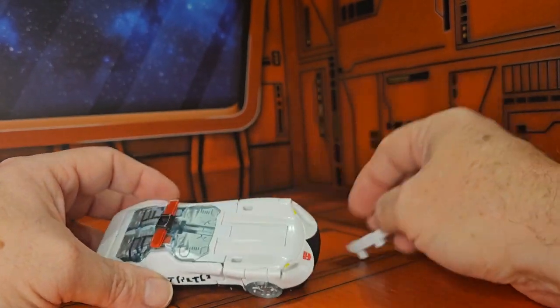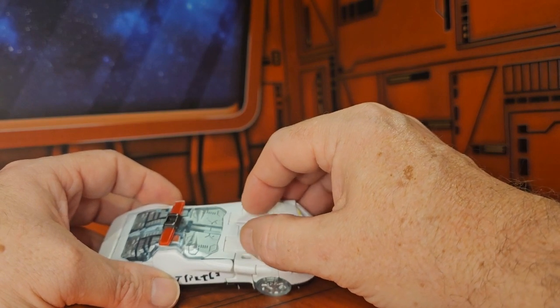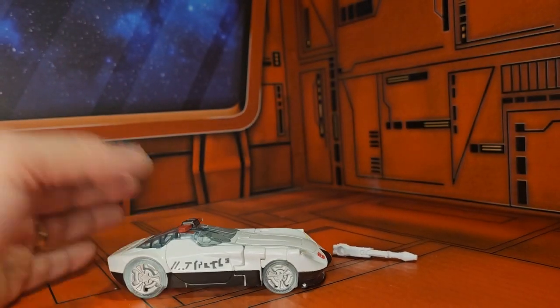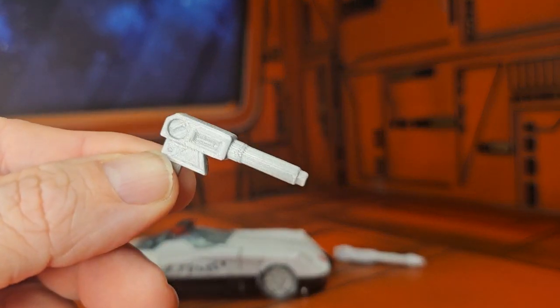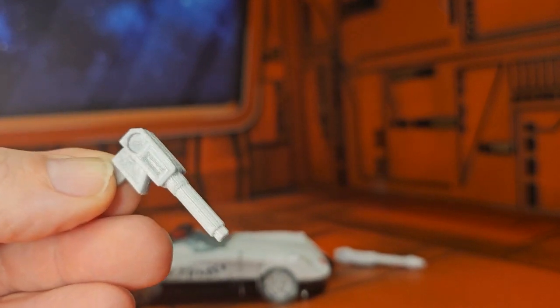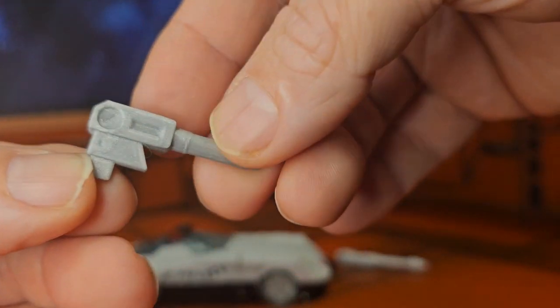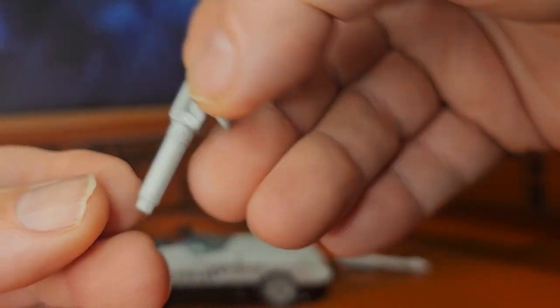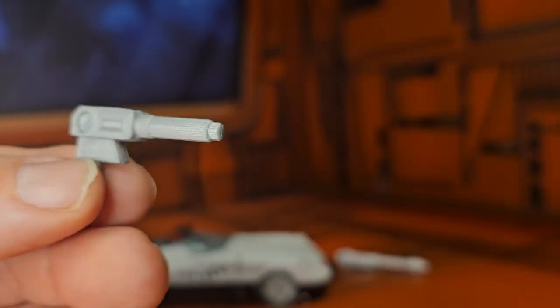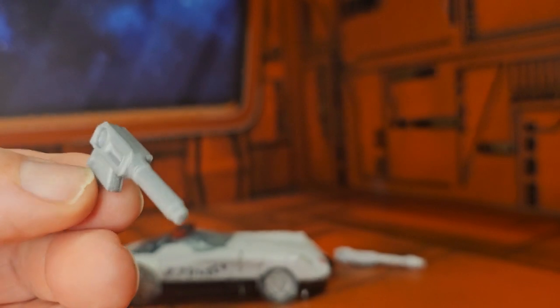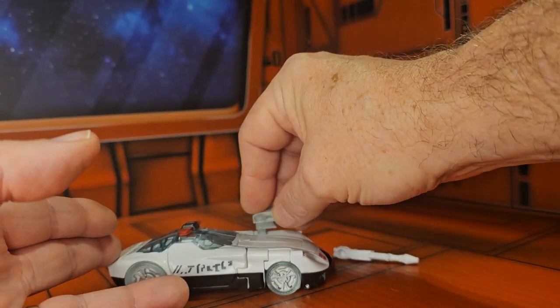Now he has these extra ports here. You can buy 3D printed shoulder cannons. Here I have one just for display purposes. I bought it on eBay a long time ago, but you probably can find it on Etsy. It's just the shoulder cannon and if you get two of them you can just put it here.